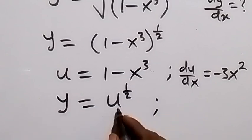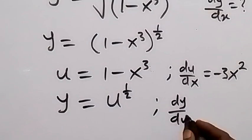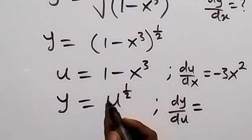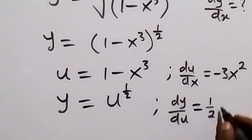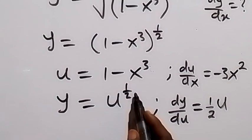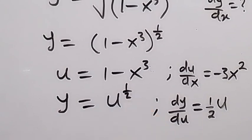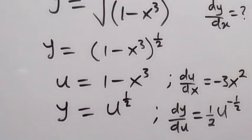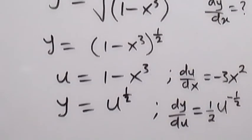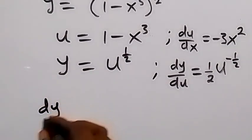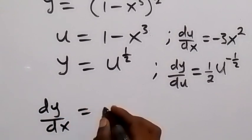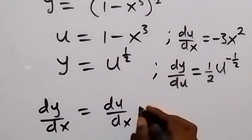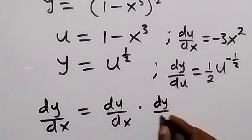On this side we find the derivative of y with respect to u — that's dy/du. When we differentiate u to the power half, we bring the half down: half times u, then subtract 1 from the power, giving u to the power minus half. Now dy/dx by the chain rule equals du/dx multiplied by dy/du.